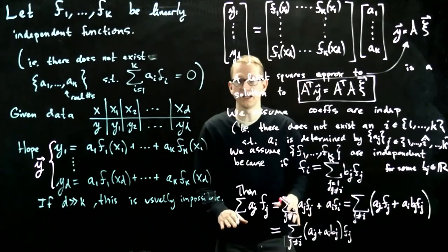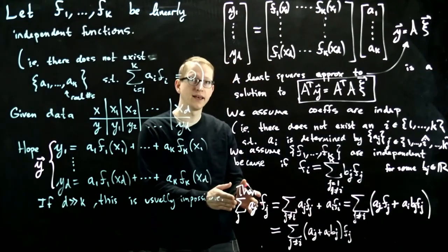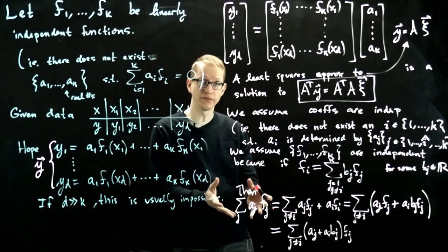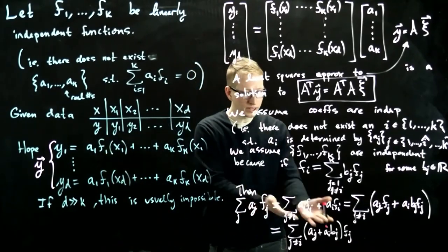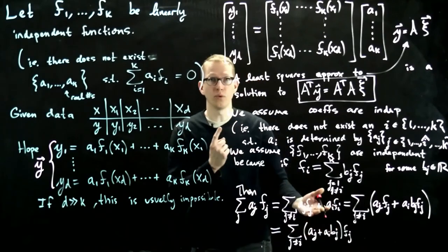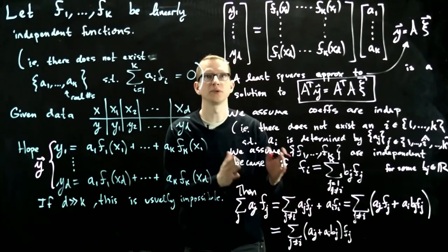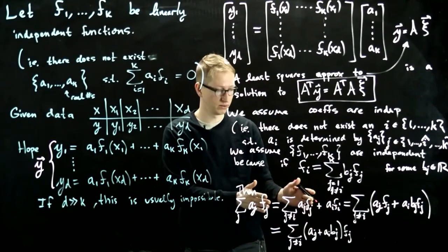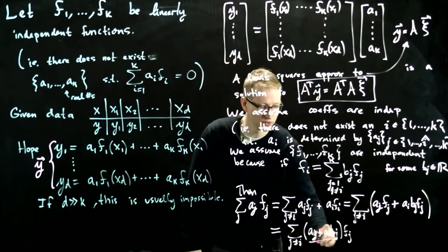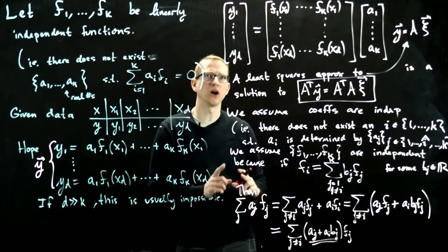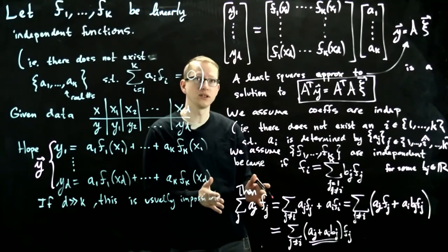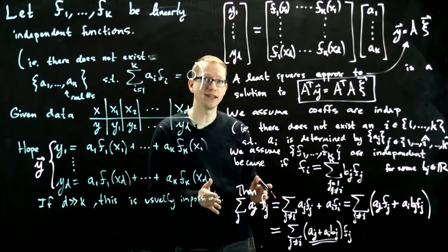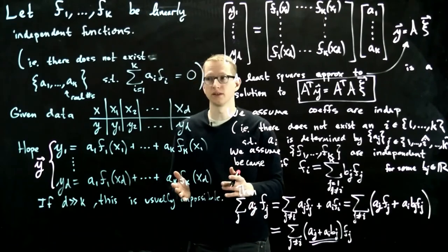So now what we've done is we've re-expressed our linear combination of these functions in terms of k minus 1 functions. And now our coefficients have changed. So in other words, there was already a dependence on the coefficients in some sense, and so we usually demand that the functions are linearly independent so that we avoid this issue.